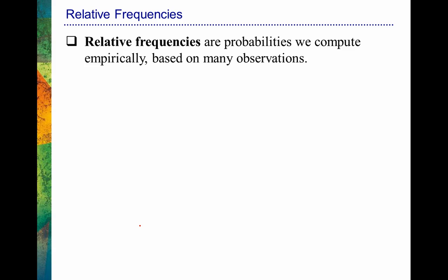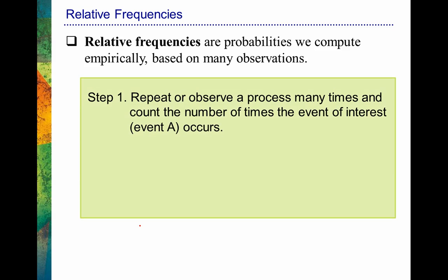There's really not much more to say about subjective probabilities — it's simply based on our intuition and experience, an estimate of probability. Now let's talk about probabilities from the relative frequency perspective. Here we're talking about computing probabilities empirically, meaning based on observation — based on measurements and observations from the past. First we want to repeat and observe some process many times and get a count for the number of times that some event has happened. We're talking about the probability of some event A happening.